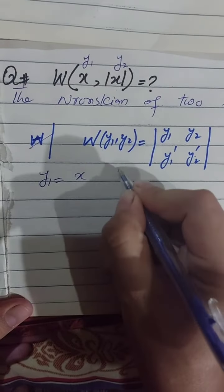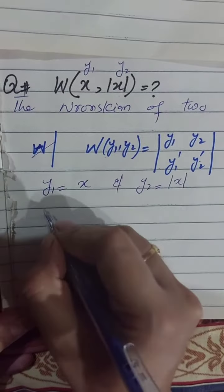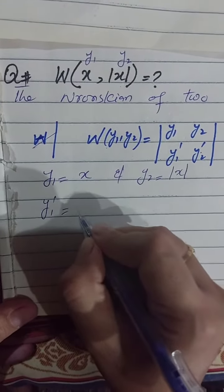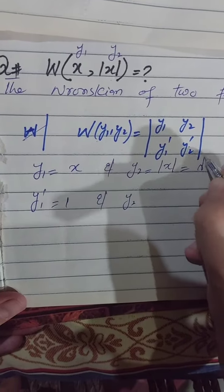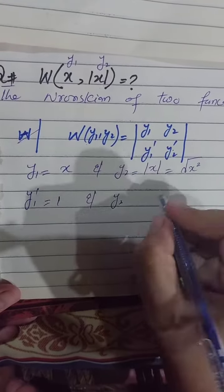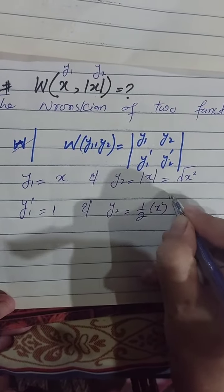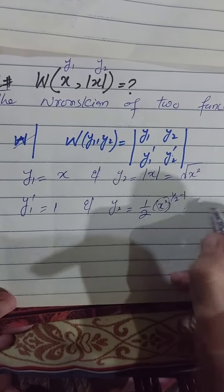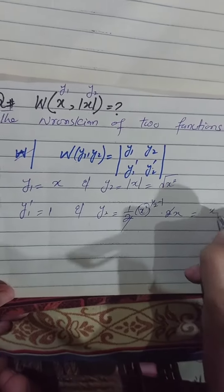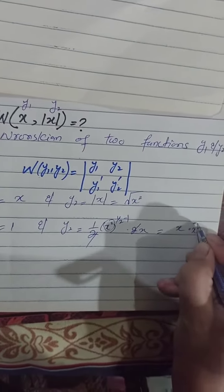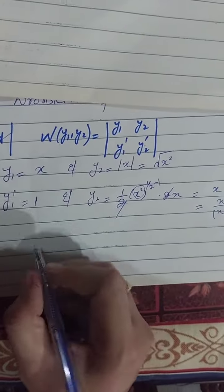Here y1 is x and y2 is x absolute. We cannot directly differentiate x absolute, so we put x absolute equal to the square root of x squared. By using the power rule, we can easily differentiate the x absolute function. We get x divided by x absolute as the differentiation of x absolute.